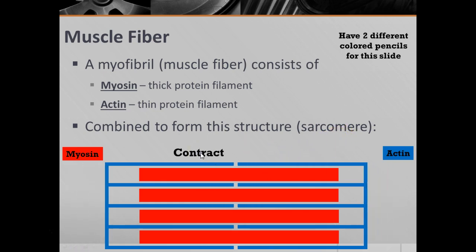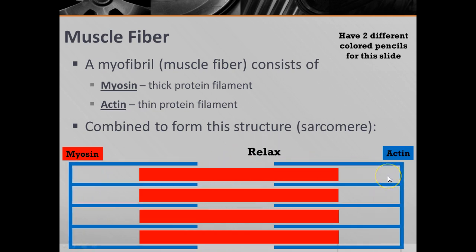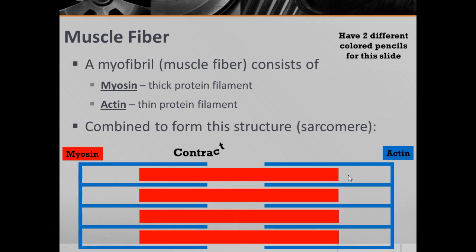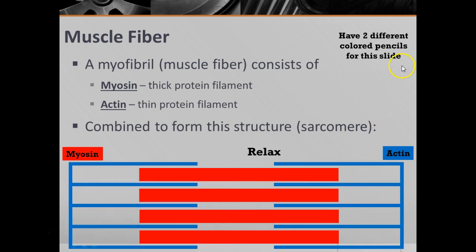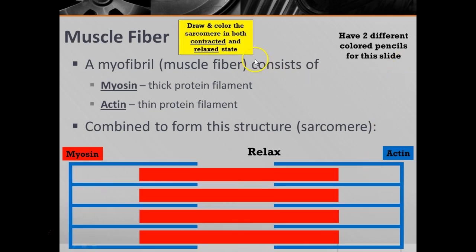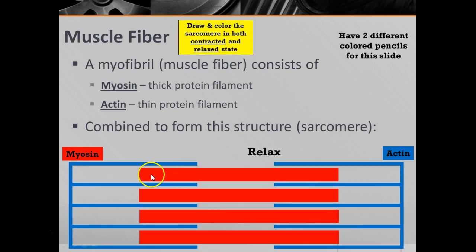When the cells are actually trying to cause the muscle to contract, you're going to have the actin move in. The myosin doesn't move — actin is the part that actually moves. When it relaxes, they let go and snap back out. So the whole sarcomere itself is going to shorten as a result of the actin moving along. Here we have it in the contracted phase; here we have it relaxed. With two different colored pencils, draw and color the sarcomere in both the contracted and relaxed state in your notes.